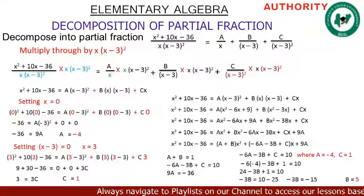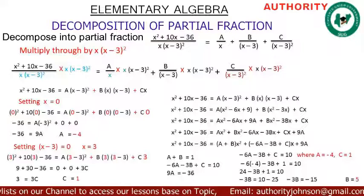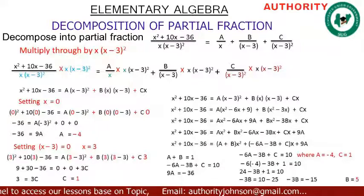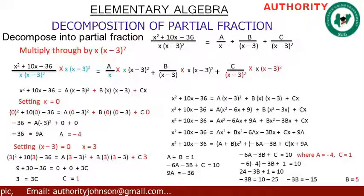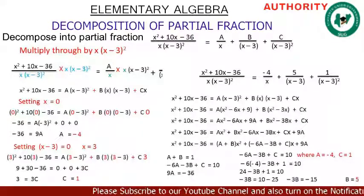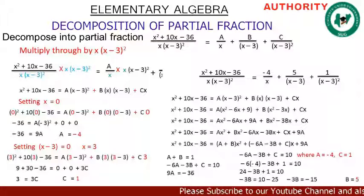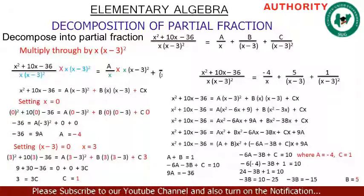So we have found: A equals minus 4, B equals 5, and C equals 1. Substituting back into our initial expression, x squared plus 10x minus 36 over x(x minus 3) squared equals minus 4 over x, plus 5 over (x minus 3), plus 1 over (x minus 3) squared. Thank you very much. Please subscribe if you haven't already.